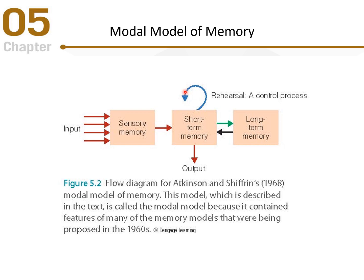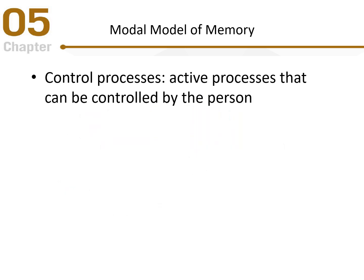The other option is rehearsal — with enough rehearsal, information moves to long-term memory where it can last quite a long time. To retrieve from long-term memory, information must first move back into short-term memory so we can use it in the present moment. These are called control processes — active processes that can be controlled by the person.